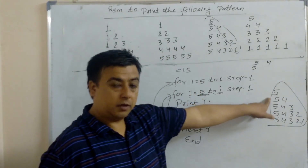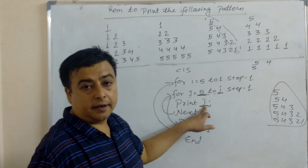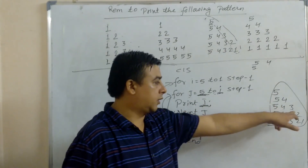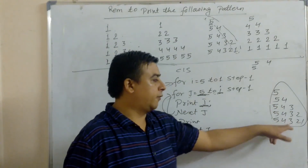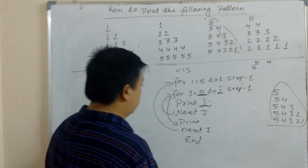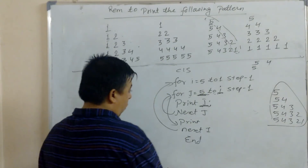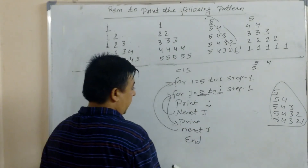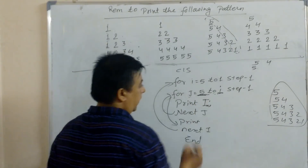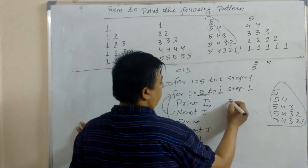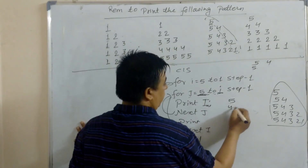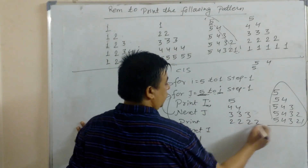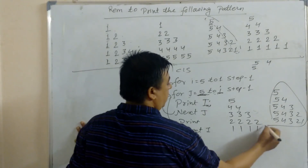If you print the inner loop variable J, it gives the pattern 5 / 5 4 / 5 4 3 / 5 4 3 2 / 5 4 3 2 1 — different numbers decreasing each row. But if you print the outer loop variable I instead, the same number repeats in each row: 5 / 4 4 / 3 3 3 / 2 2 2 2 / 1 1 1 1 1.